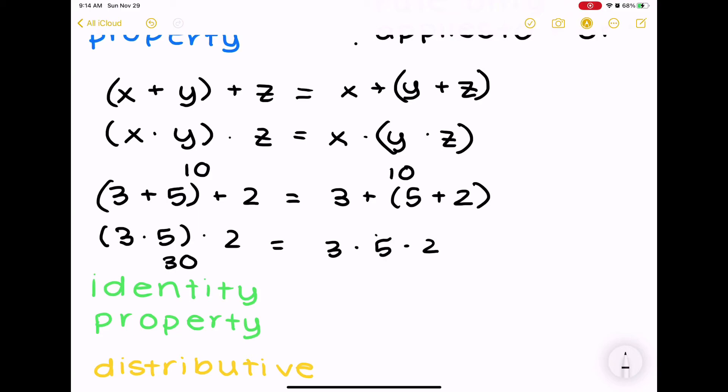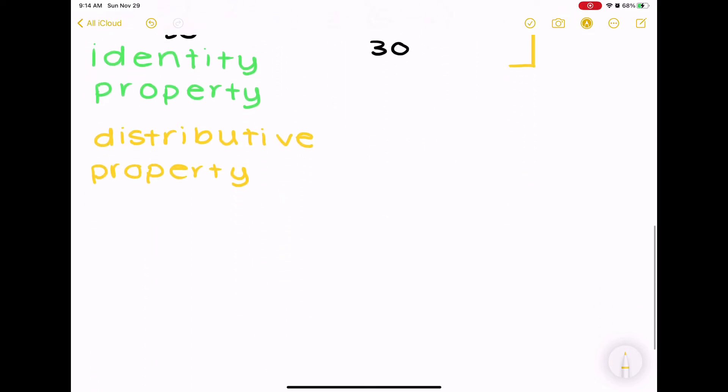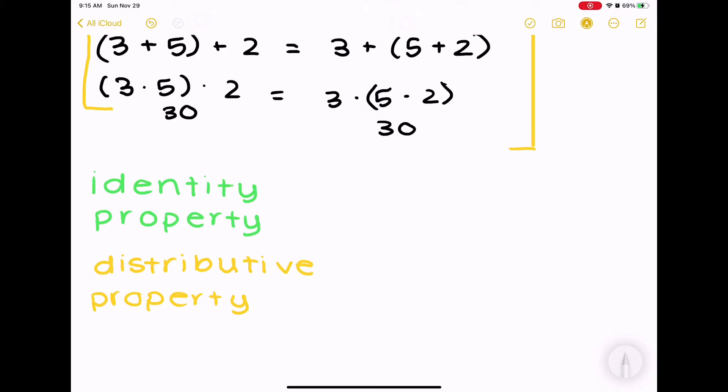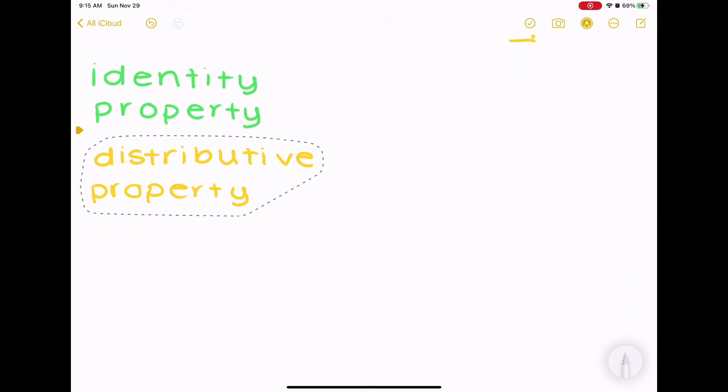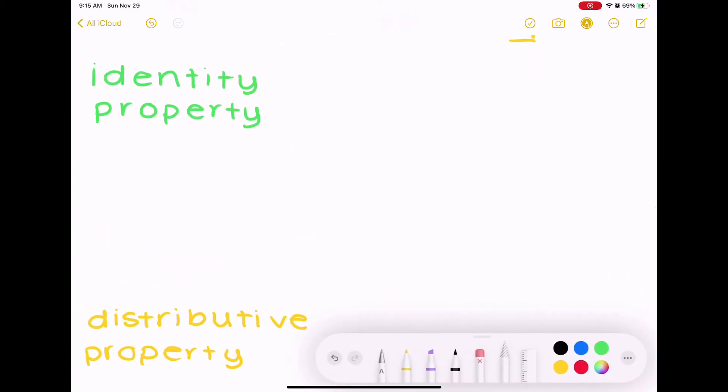Same with multiplication. We have 3 times 5, which is 15 times 2, which is 30. And 5 times 2 is 10 times 3, which is 30. So, as you can see, this rule applies to only multiplication and addition, but it won't apply to anything else. I just put those in some brackets to show you that they are examples.